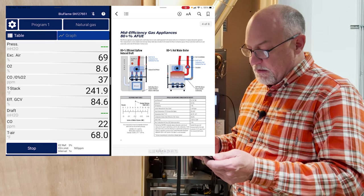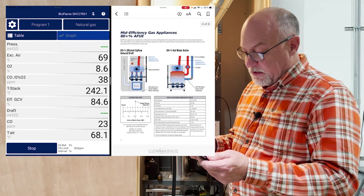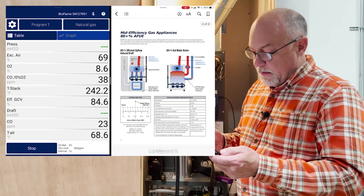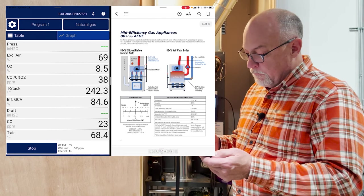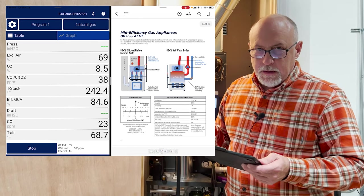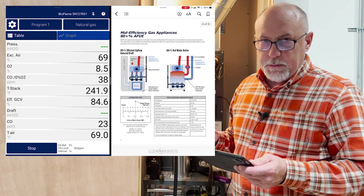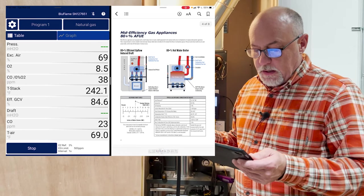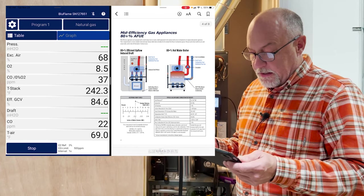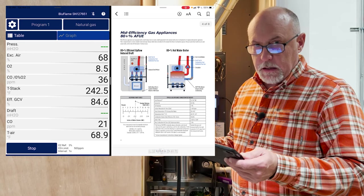So my excess air should be between 25 and 75%. I'm at 69. That's good. My O2 between seven and nine. I'm at 8.6. That's good. My CO air free, and that's with that CO at 0% oxygen, that's an air free number, less than 100 parts per million. We're at 37. Our stack temperature between 240 or 242. We're looking for 325 to 450. Now, this is a Goodman. It's an 80 plus. It's got a really low temperature rise. I've been meaning to contact Goodman and ask him about this because this thing always runs a low stack temperature, which is also why it's running a higher efficiency because it's running at 84. We're looking between 78 and 82 is where we want to see. And this one's running about 84% gross efficiency.